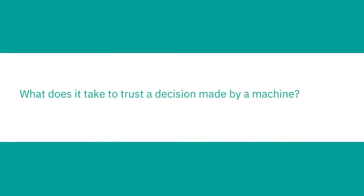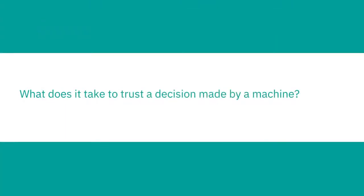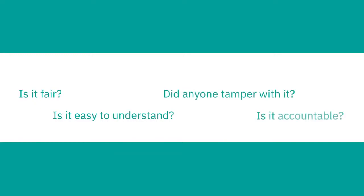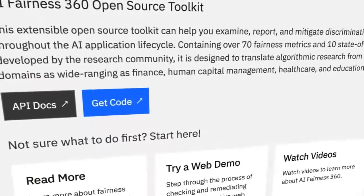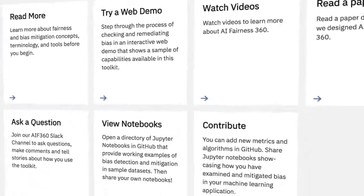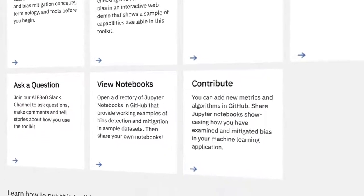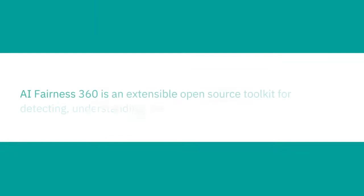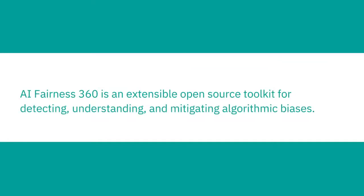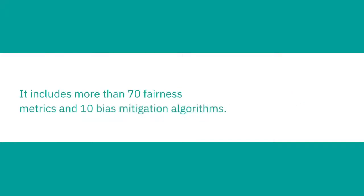To deal with the complexities of actually creating algorithms that are free of biases, one of the things that we've done recently is that we created a toolkit called AI Fairness 360. We try to collect pretty much all the algorithms that exist in the community and put them in a toolbox in a way that will really make it easier for practitioners and developers to deal with these issues.